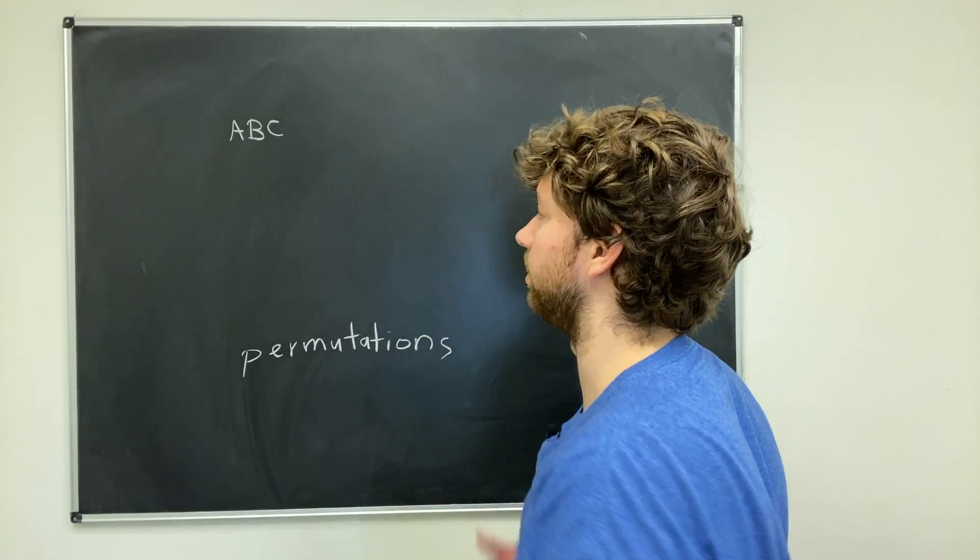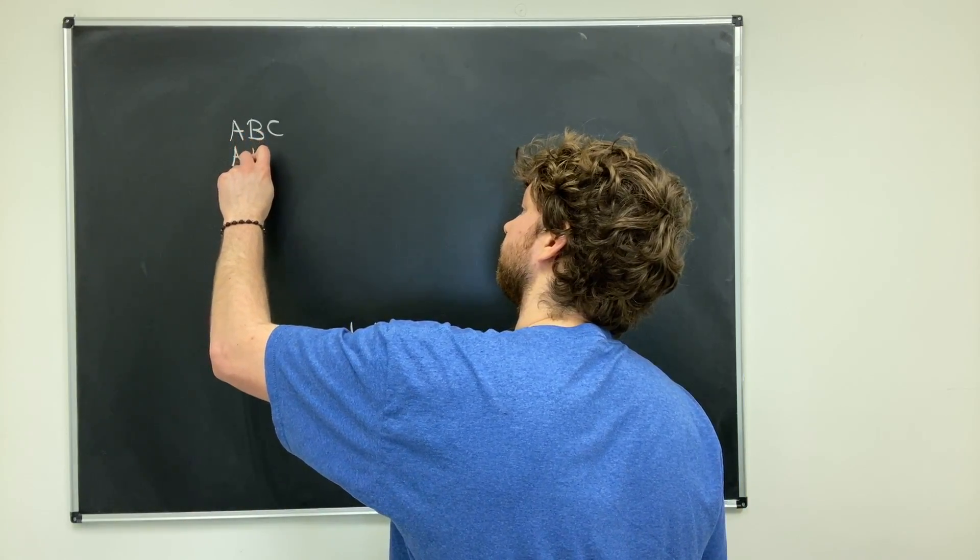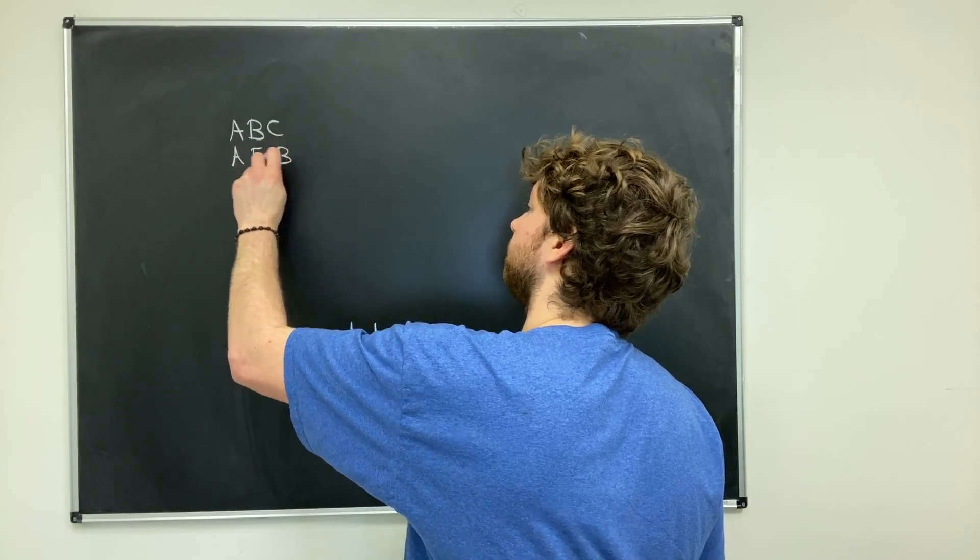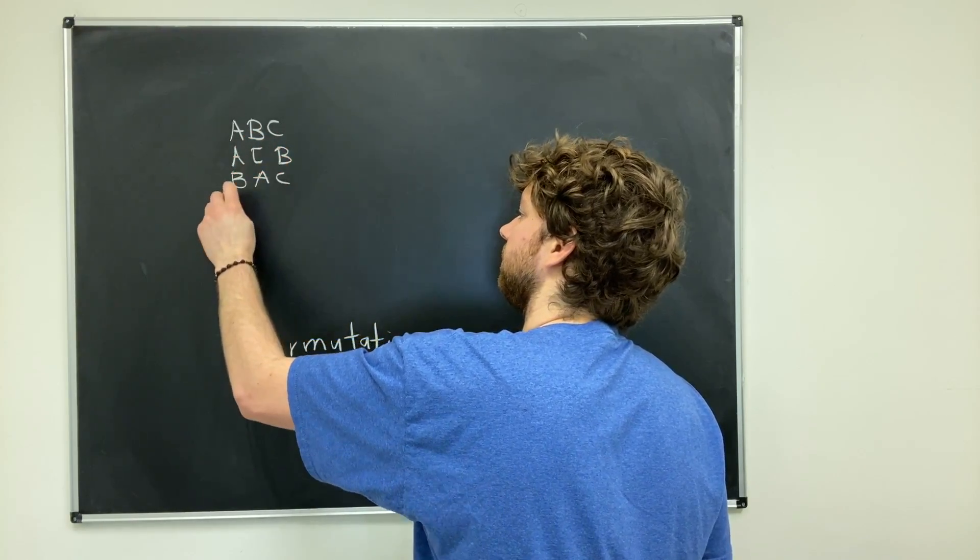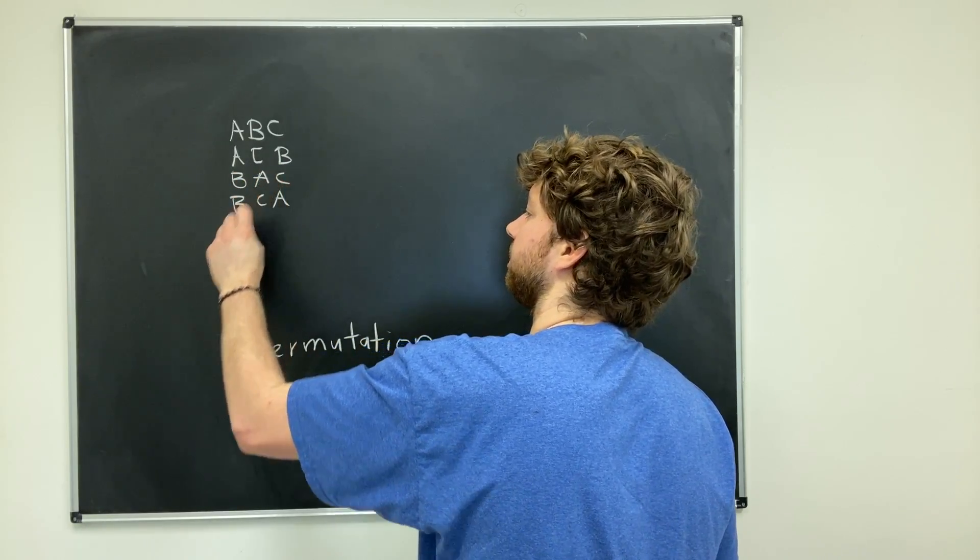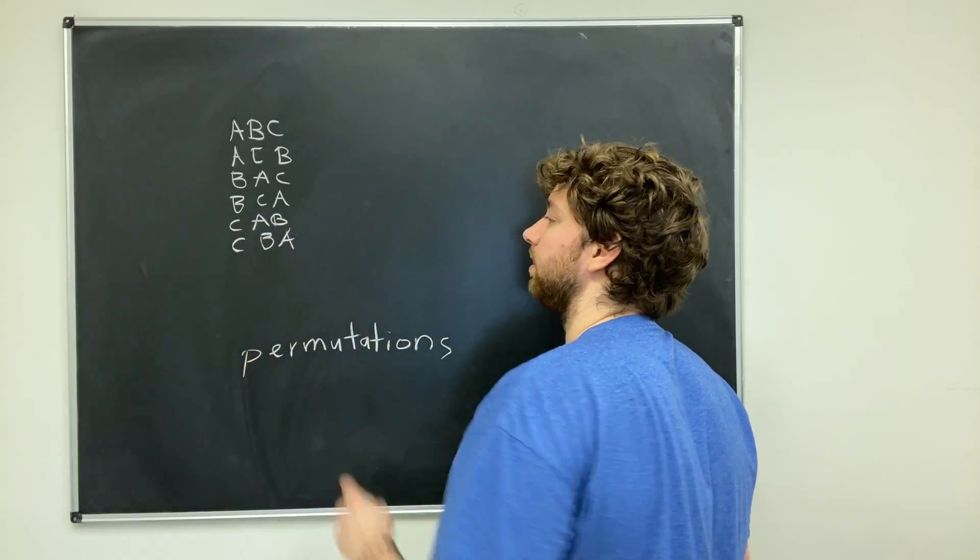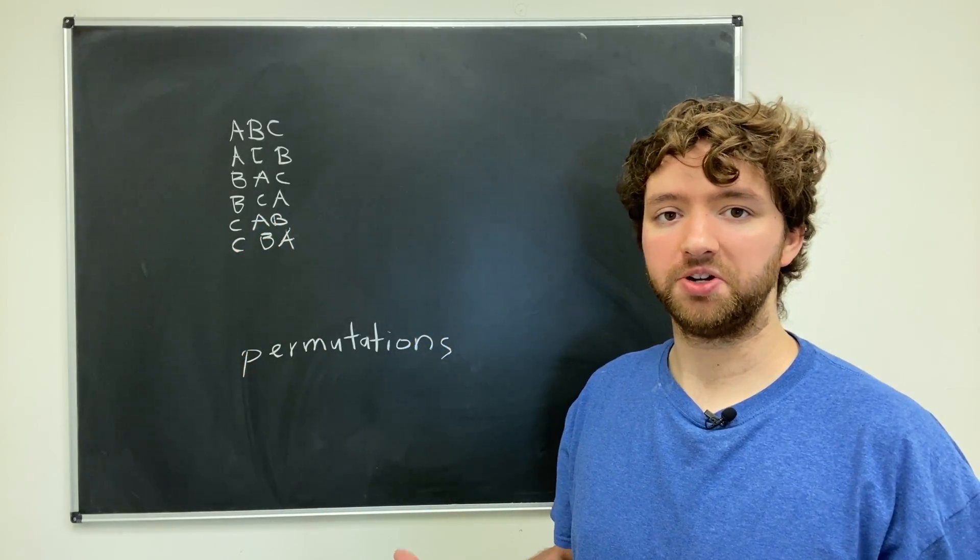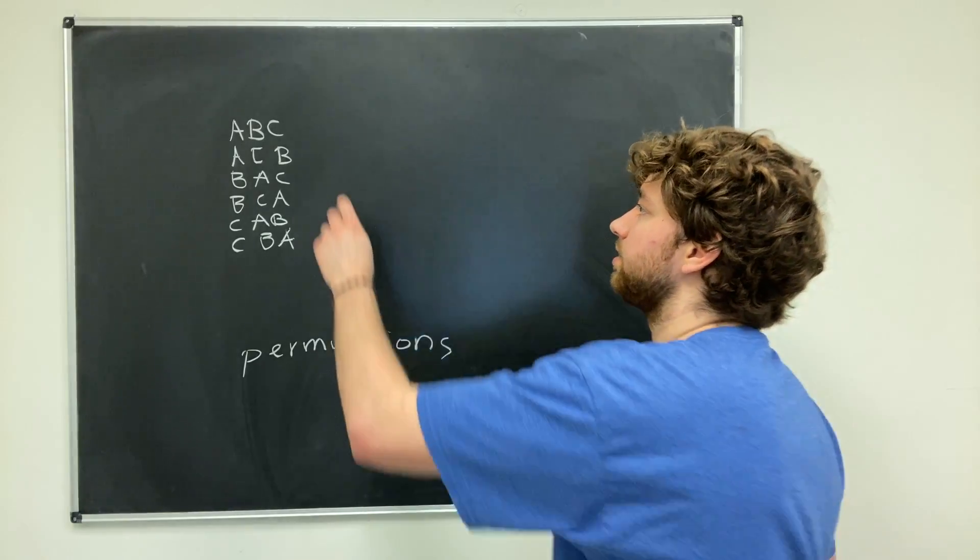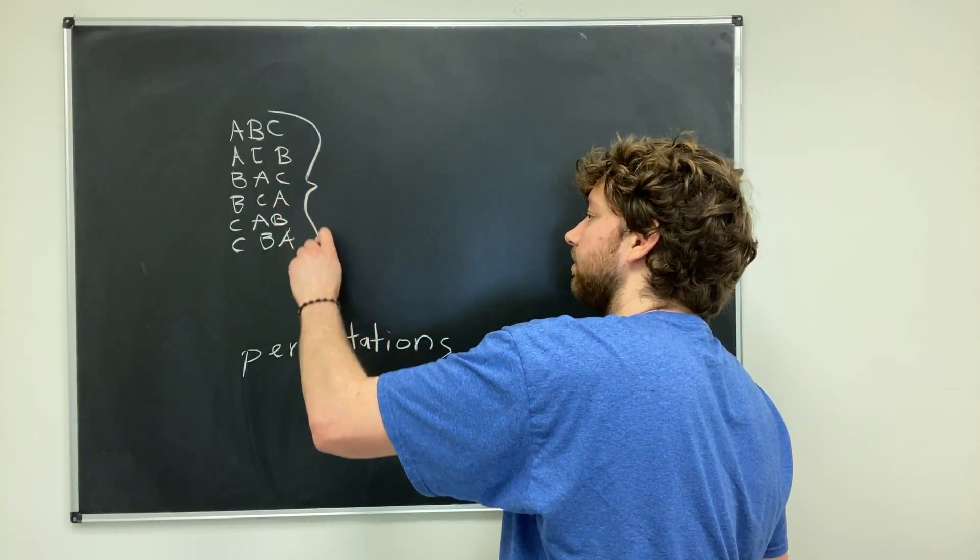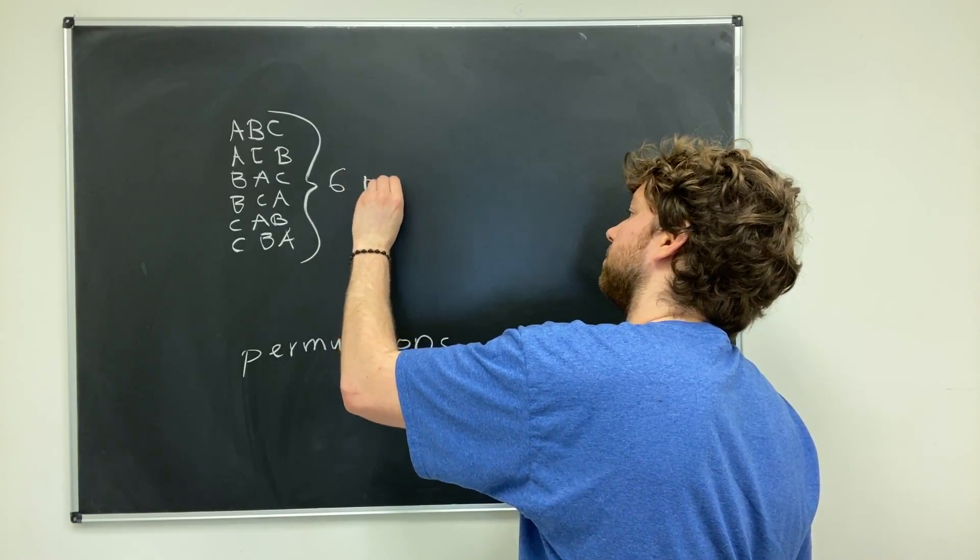And we're just going to go through this because it shouldn't take that much time. So we could have ABC, but we could also have ACB. We could have BAC, BCA. We could have CAB, and CBA. So those are all the possible different arrangements without any repeats, and without leaving anything out. This totals six possibilities. And these possibilities are known as permutations.